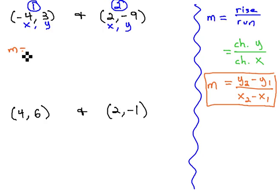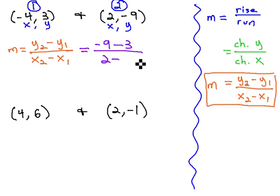So if the slope formula is y2 from the second point and y1 from the first point, over x2 from the second point, minus x1, we simply have to see what number corresponds with each part. y2 is the y from the second point, negative 9, minus y1, which is the y value from the first point, 3, over x2, the x value from the second point is 2, minus x1, which is the x from the first point, negative 4.